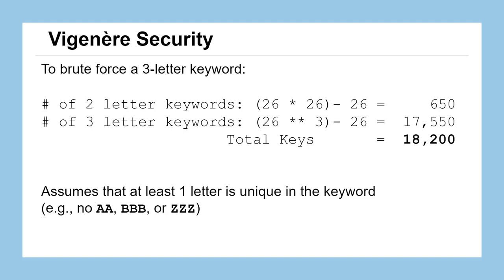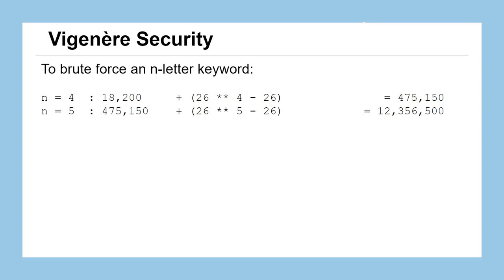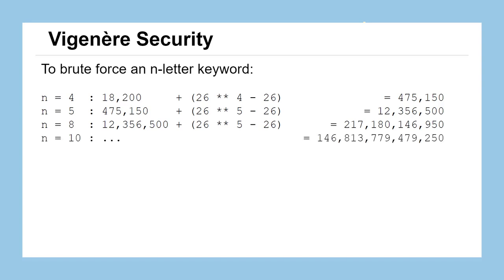Remember, these keywords can be of any length. If we kept going and tried N-letter keywords — for N = 4 we'd have close to a half million; N = 5 gives over 12 million; N = 8 gets us to 217 billion; N = 10 is up to 146 trillion. And at N = 20 we reach an enormous number of keywords we'd need to try in order to brute force this.